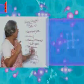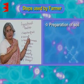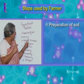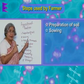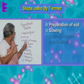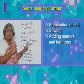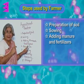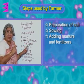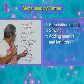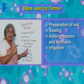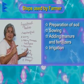The first step is preparation of soil. Then sowing, adding manure and fertilizer. After that, he gives water — that is irrigation.